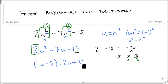I now have my factors. If I wanted to check this out, I could. u times 2u is 2u squared, u times 3 is plus 3u, minus 5 times 2u is minus 10u, and minus 5 times positive 3 is minus 15. Combine like terms and notice I'm back to my original problem.